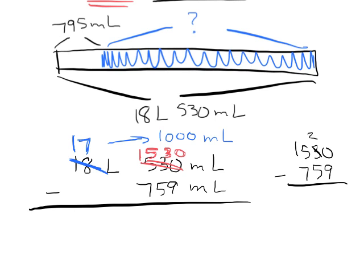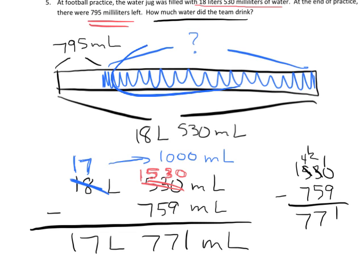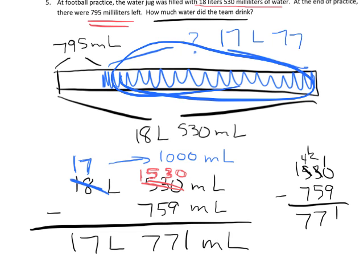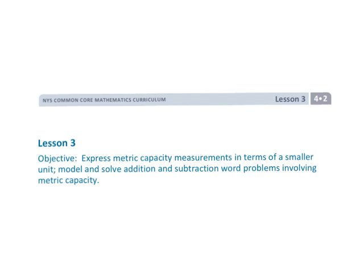We subtract and end up with 771 milliliters. Over here we have 17 minus nothing, so that's 17 liters. That tells us the amount of water they drank is equal to 17 liters 771 milliliters — that's how much water they drank during practice. That's a lot of water! And that is Grade 4 Module 2 Lesson 3.